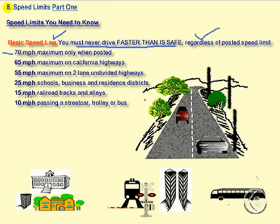The maximum speed limit on California highways is 65 miles an hour — it's 70 if 70 is posted. When you're on a two-lane undivided highway, like in this picture, it's 55 miles an hour.